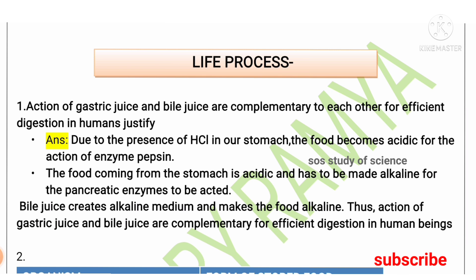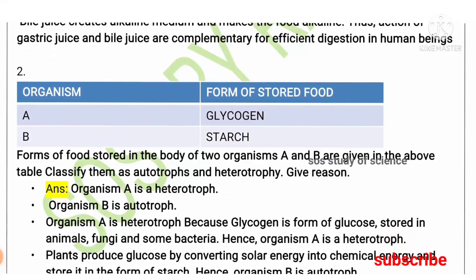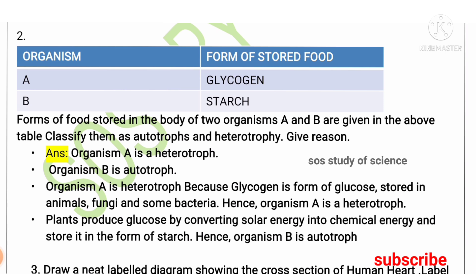You may have a little confusion about how they are complementary; you must know the process of nutrition in human beings to answer this question. Moving to the second question: two organisms are given — organism A and organism B. Food is stored in the form of glycogen in organism A, and food is stored in the form of starch in organism B. Classify them as autotrophs and heterotrophs.